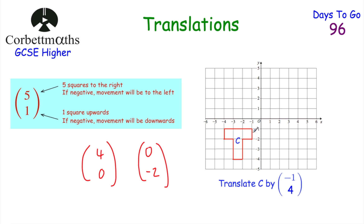We translate the shape by moving it one square left and four squares up. What I like to do is work one point at a time. Starting with the first point, move it one square left and then four up. Then do the same for each remaining corner — one to the left and four up for each. Once all points are plotted, join them up with a ruler and pencil. That's it — we've translated C by the vector (-1, 4), moving it one square left and four up. Always use a ruler and pencil for these questions.